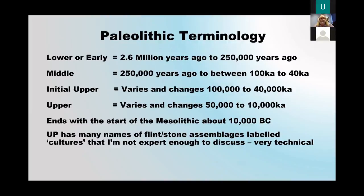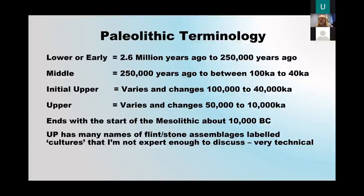Paleolithic terminology is something that's actually quite difficult to get your head around. It goes: Lower/Early, 2.6 million years ago to 250,000 years ago; Middle, 250,000 to 100,000 years ago. The initial Upper Paleolithic — and that changes — some people argue it started as early as 200,000 years ago, some say 40,000 years ago. There are lots of debates about the changing dates, and different dating methods have given us different dates.